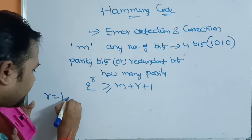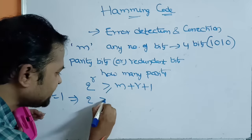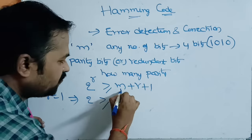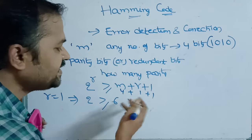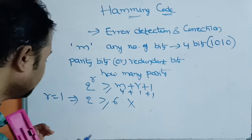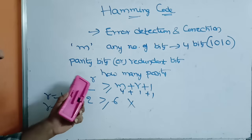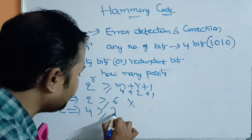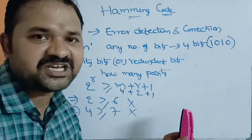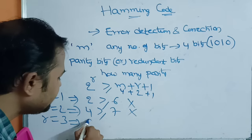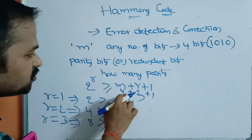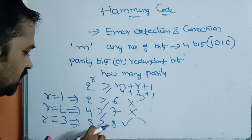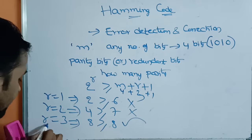Let us assume r = 1. Then 2^1 = 2 ≥ 4 + 1 + 1 = 6 — this condition is false, so r should not be 1. Let r = 2: 2^2 = 4 ≥ 4 + 2 + 1 = 7 — also false. Now let r = 3: 2^3 = 8 ≥ 4 + 3 + 1 = 8 — condition is true. So the number of redundant bits is 3.